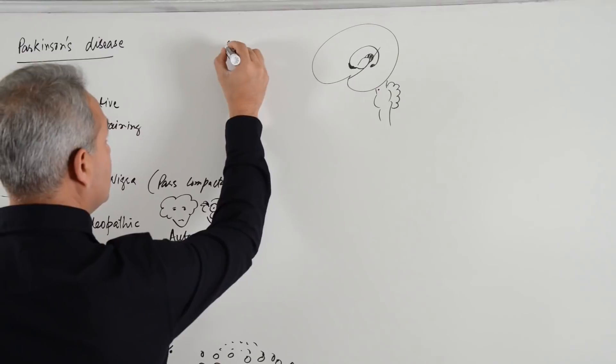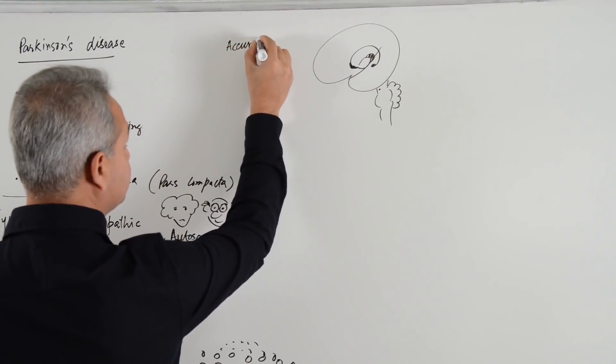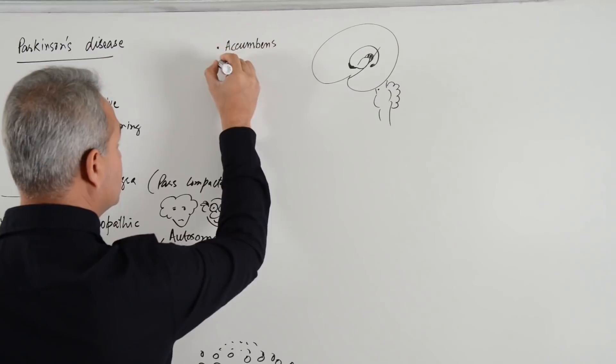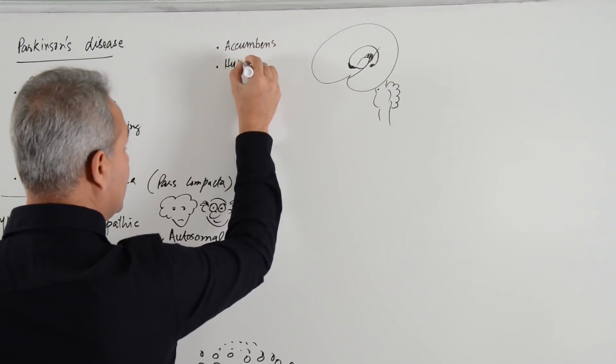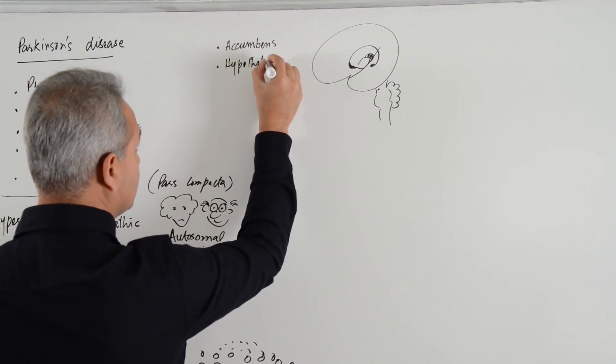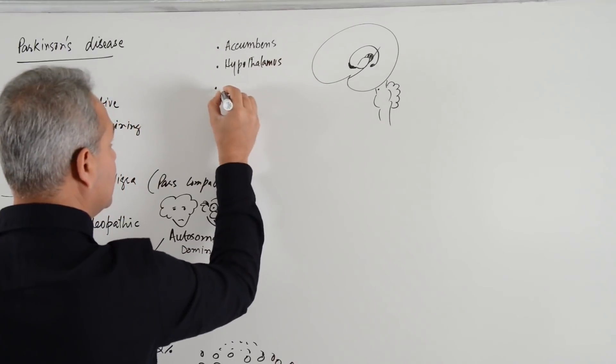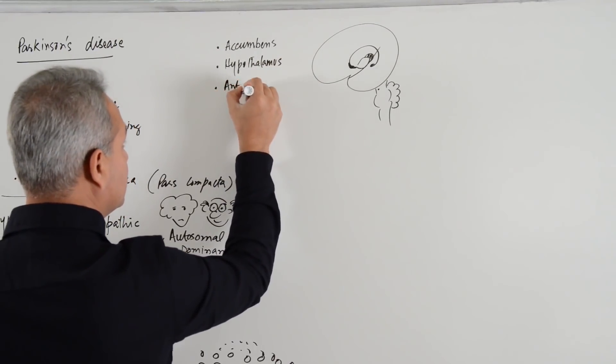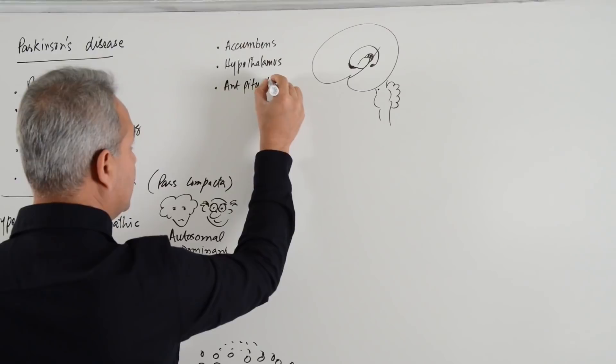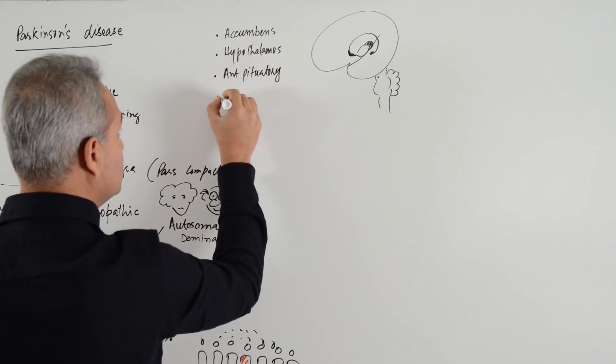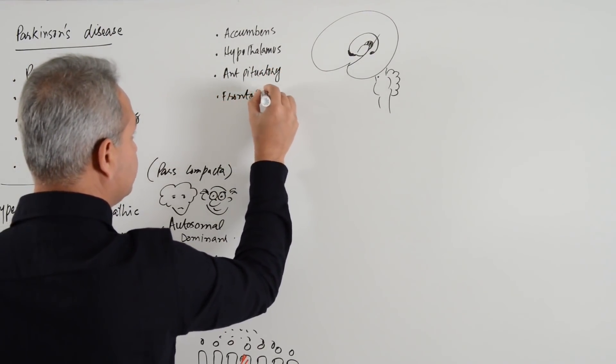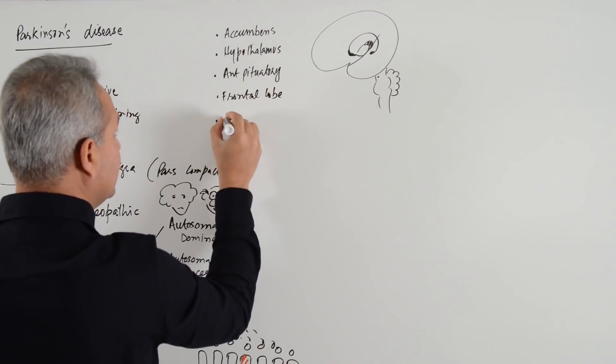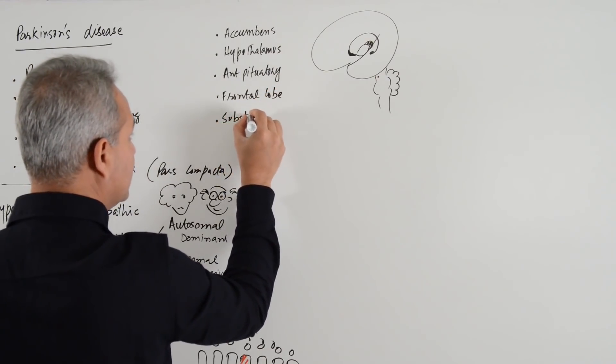Number one, nucleus accumbens. Number two, hypothalamus. Number three, anterior pituitary. Number four, frontal lobe. And then, substantia nigra.